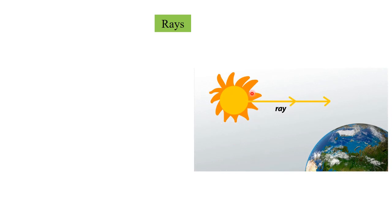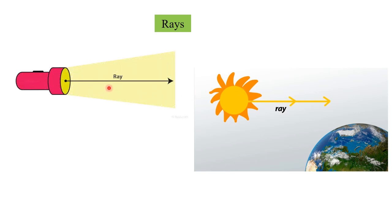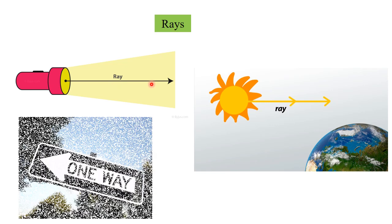We can see that the rays starting from the sun go forward in all directions. Light rays from a torch also start from one point and go forward continuously in one direction only.